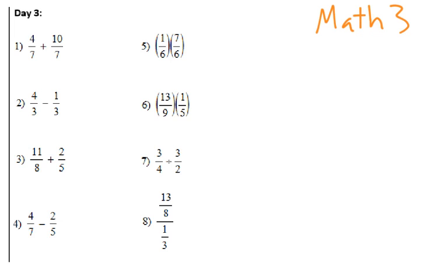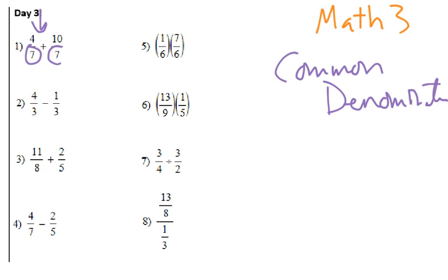Now remember when we add and subtract fractions, we've got to have common denominators. Same number. If they're not, we have to make them common. So number 1 and 2, notice I've got common denominators. So they're easy, right? We just deal with the top numbers. So I leave it over 7, and I go 4 plus 10 is 14, and we simplify, 14 over 7 is 2.